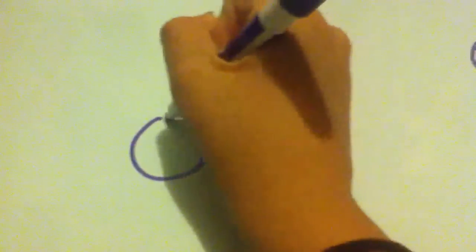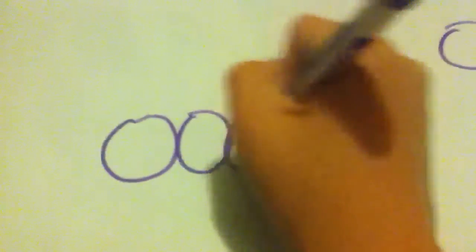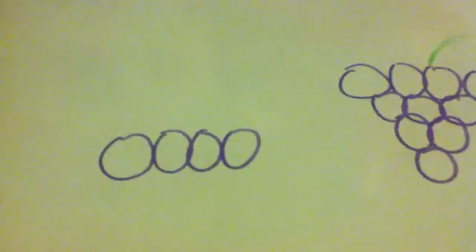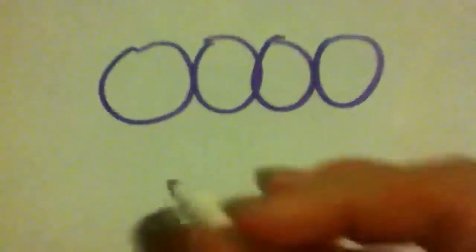All right, first you're going to start with four basic circles which is one, two, three, four. Feel free to pause this video anytime. Also if you'd like, you can just add three circles instead of four, but I like to add four.